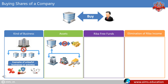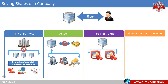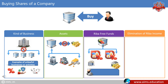Third condition: riba-free funds. Companies are usually involved in two types of interest-based transactions. They take interest-based loans to increase funds, or they deposit their surplus in interest-bearing accounts. According to Sharia scholars, it is not permissible to purchase the shares of a company that is engaged in interest-based dealings.